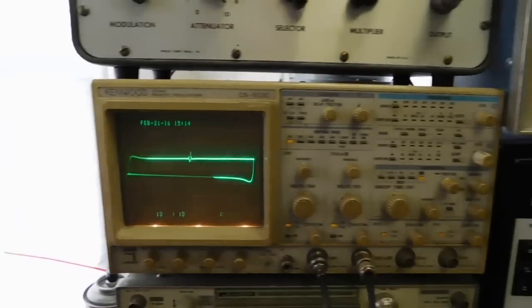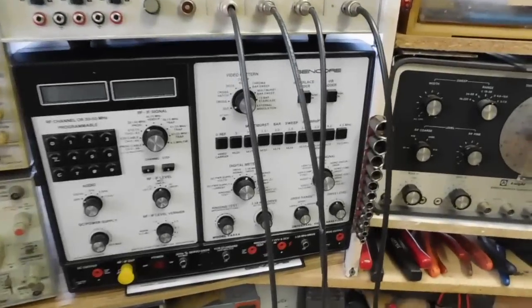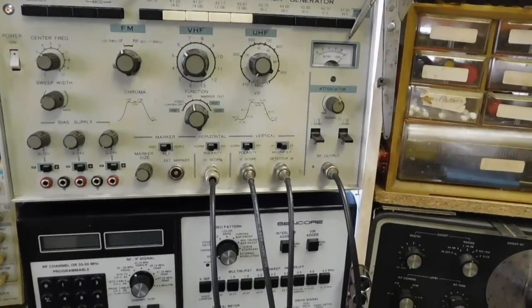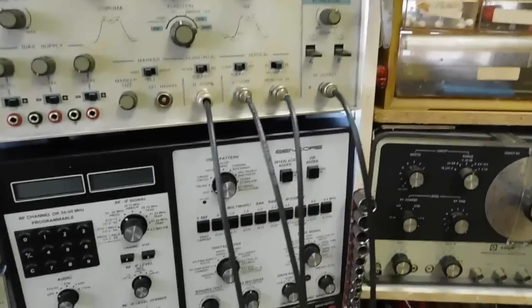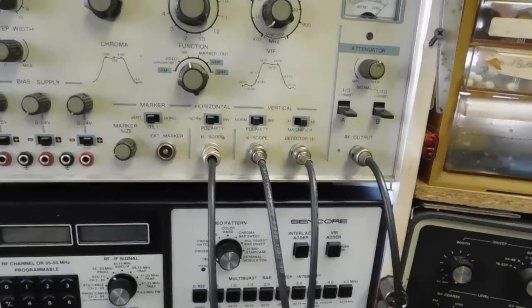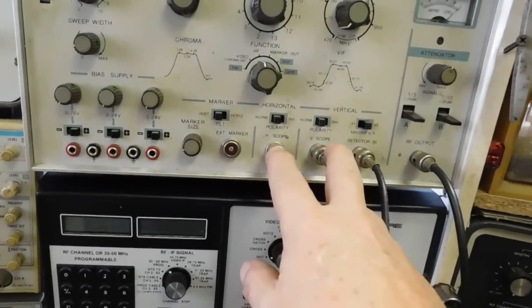But anyway, I think the main thing that the person was wanting to know is more or less the typical operation and connection to the scope. This is a post marker generator and it works by feeding two outputs from the generator down to the scope.